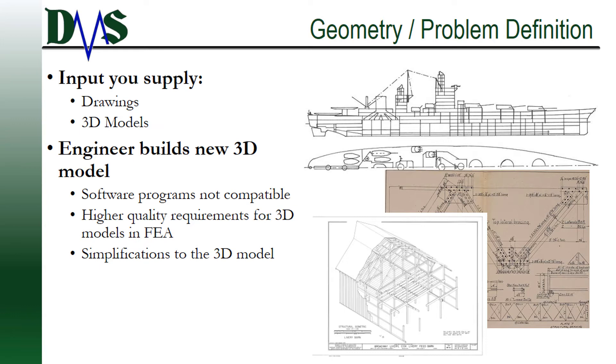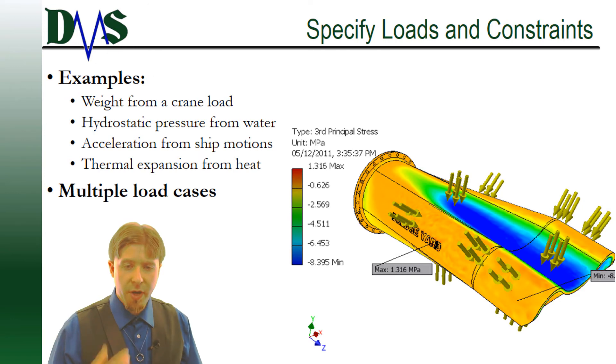Even if you supply a 3D model as a starting point, the engineer will need to build a new model for three main reasons. First, software programs are often not compatible with each other, so the FEA software may not be able to read your 3D model file. Second, the FEA programs usually have a higher quality requirement for 3D models. Something that looks like a closed model to you as a human, the FEA computer might see that it's not perfectly defined mathematically, and that's a problem. The third reason is that the FEA engineer usually simplifies the 3D model, eliminating extraneous details to ensure that you have the most efficient FEA computation possible.